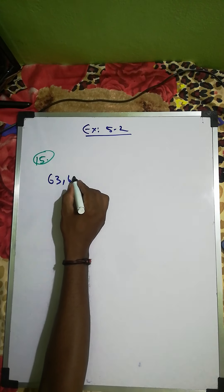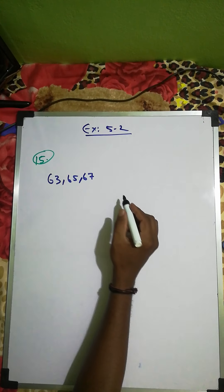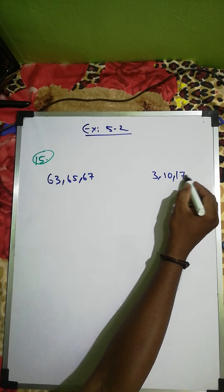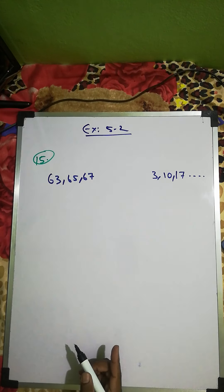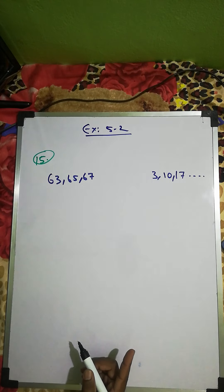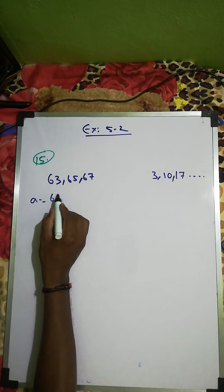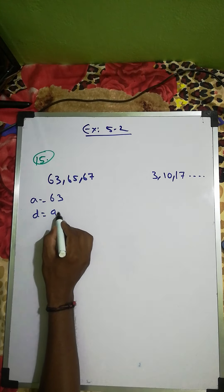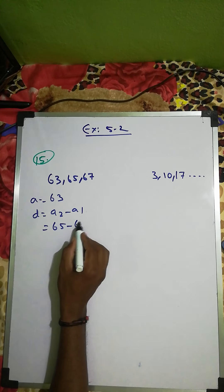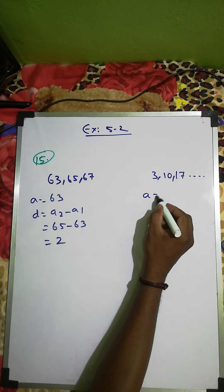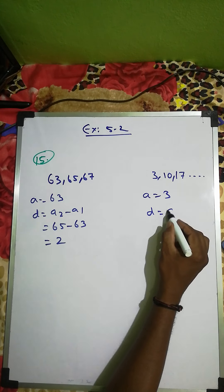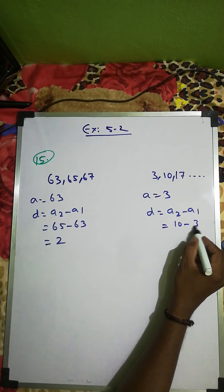Exercise 5.2, question number 15: for what value of n are the nth terms of two APs equal? The two APs are 63, 65, 67... and 3, 10, 17... So for the first AP, a is 63 and d = a2 - a1 = 65 - 63 = 2. For the second AP, a is 3 and d = a2 - a1 = 10 - 3 = 7.